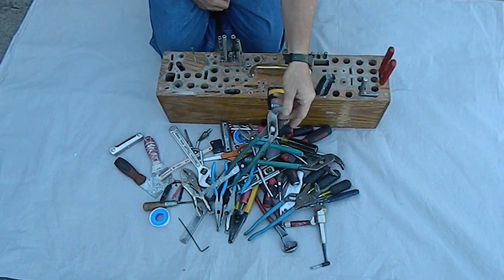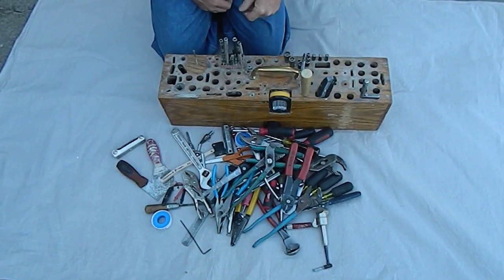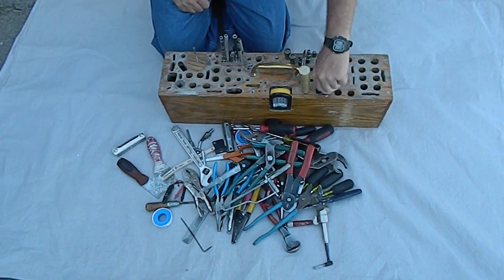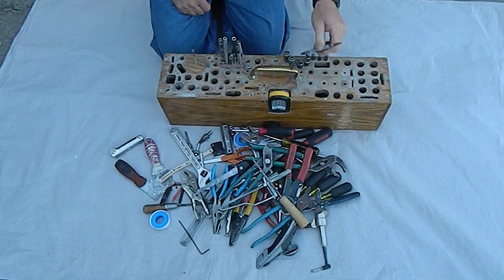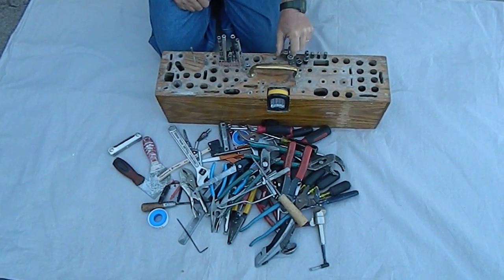We've got smaller channel locks, we've got a pair of wire strippers plus crimpers, got a fine hacksaw, and of course a drywall knife, rat tail file, and a spring-loaded punch.